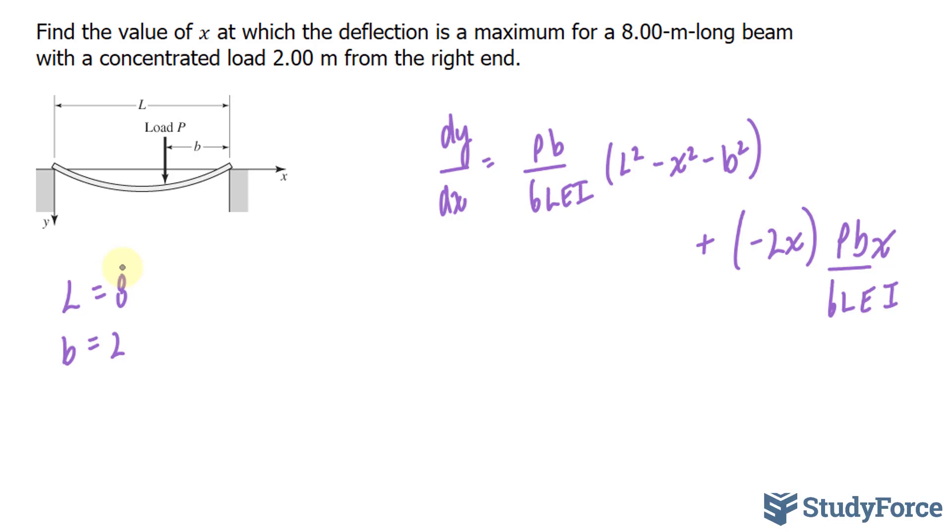So I'll leave these on the side and see if I can factor out anything and reduce this down to something that's easier to read. We have dy over dx, that part doesn't change. I can factor out Pb over 6LEI. If I do that I end up with Pb over 6LEI.